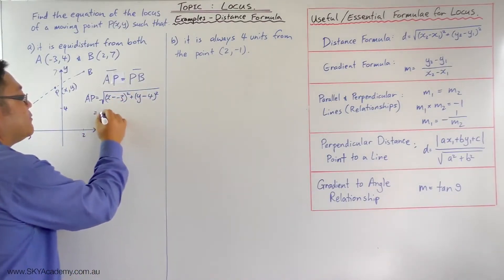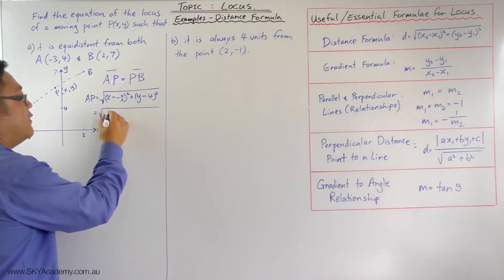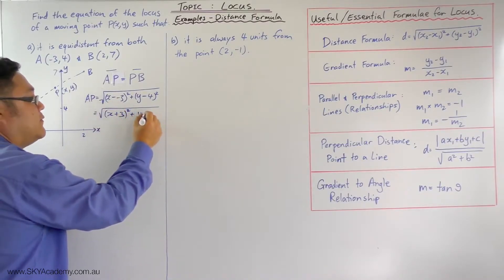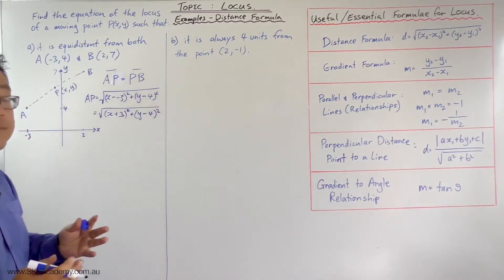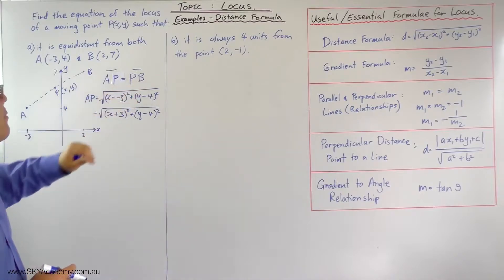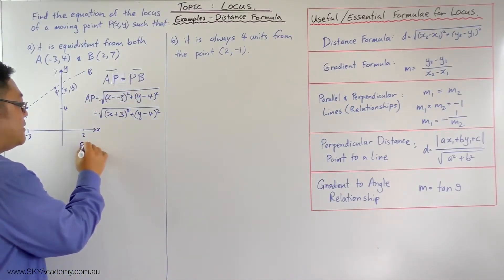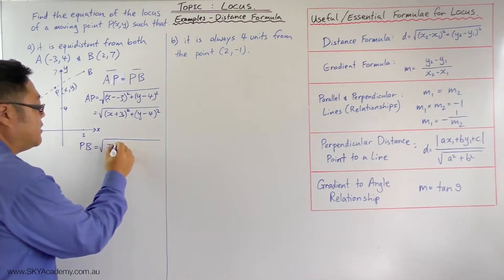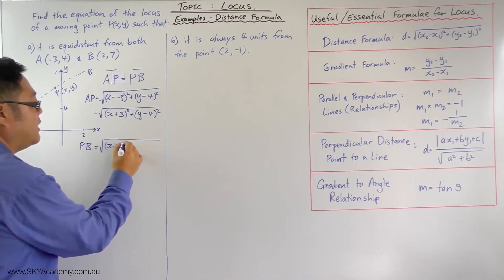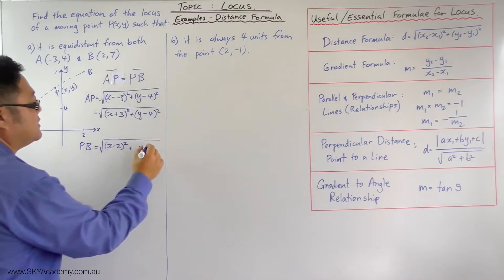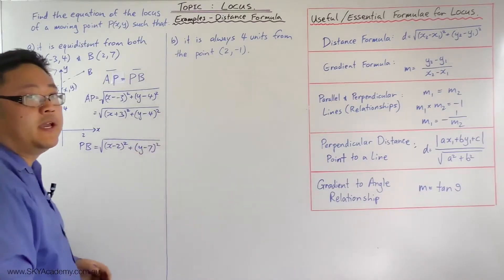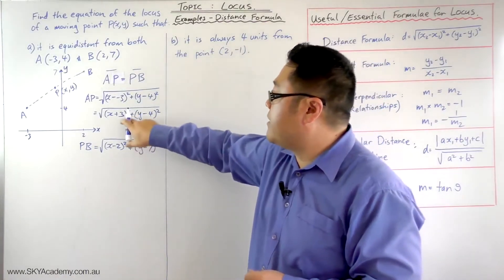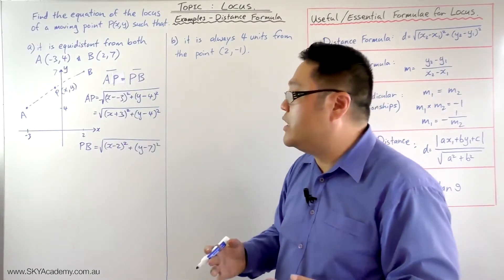Then you do the same thing for PB. So PB is going to be the square root of (x − 2) squared plus (y − 7) squared. Now what we do is equate the two — make AP equal to PB — and then simplify the equation out.